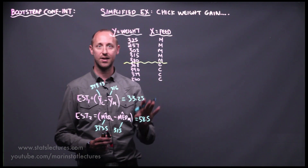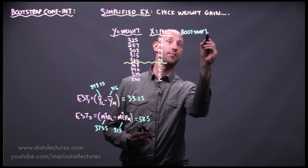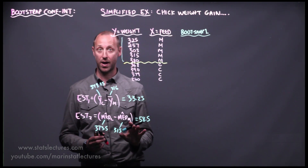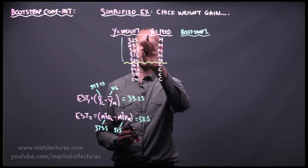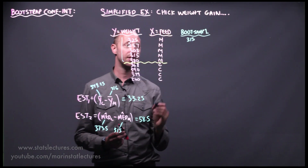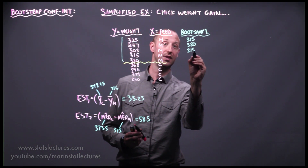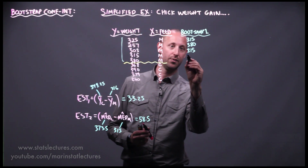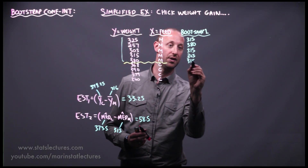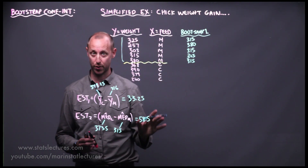Let's pull bootstrap sample number one. We reach into the five meat meal observations and randomly sample five with replacement. Suppose we get 315, then 380, then 315 again, then 325, then 315 again. A reminder that the same observation can appear multiple times, and certain observations may never show up in a bootstrap resample.